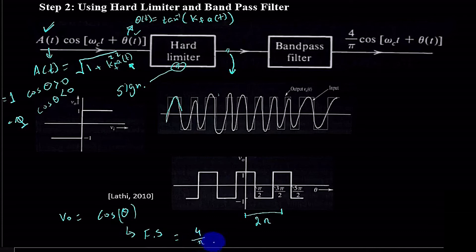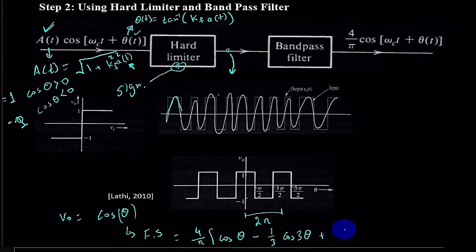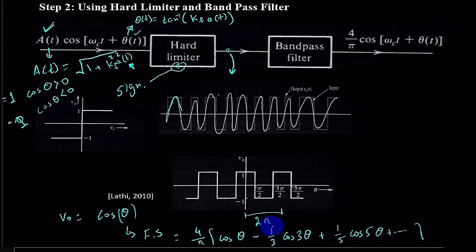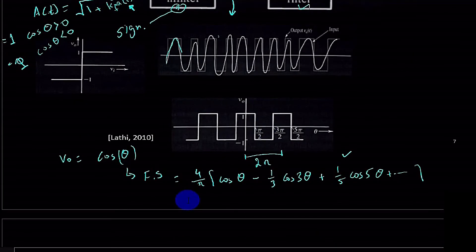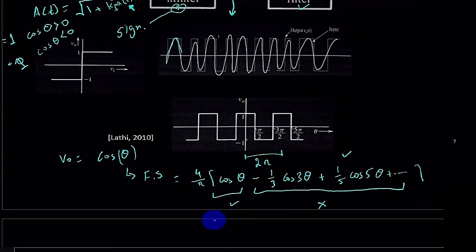In this scenario we would have a time period of simply 2π. For this square wave we have the trigonometric Fourier series: (4/π)[cos(θ) − (1/3)cos(3θ) + (1/5)cos(5θ) + ...]. So we have the fundamental harmonic θ, then 3θ, 5θ, and so on. Once we achieve this, we pass it through a band pass filter, which rejects the higher harmonics and passes only the fundamental.